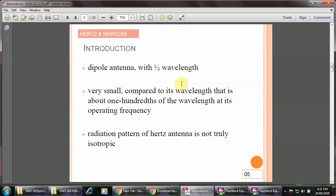Introduction: the dipole with half wavelength length is very small compared to its wavelength, about one-hundredth of the wavelength at its operating frequency. The radiation pattern of the Hertz antenna is not truly isotropic.